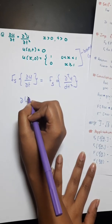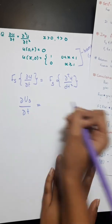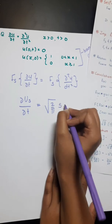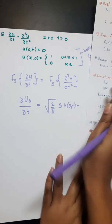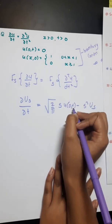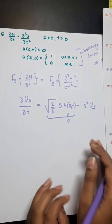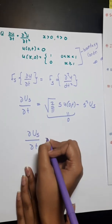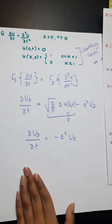The Fourier sine transform of ∂²u/∂x² is equal to √(2/π) · s · u(0, t) minus s² · Ũs. Since u(0, t) = 0, this whole term is zero. So we are left with ∂Ũs/∂t = −s² · Ũs.